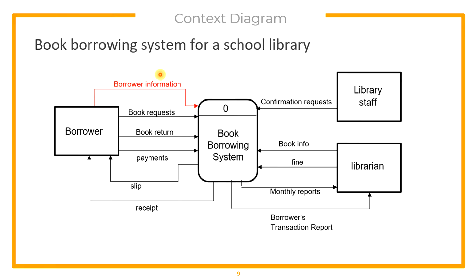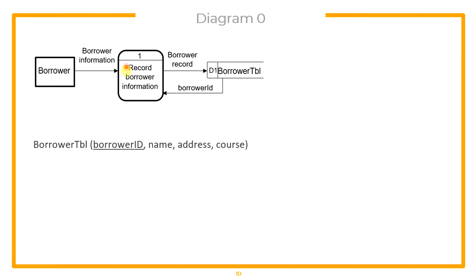Let's start with borrower information. Here we have one process for our Diagram 0. Borrower information will be recorded in the system and stored in our borrower table. Every time there is a new borrower, the last borrower ID is taken from the table plus one, and that becomes the new borrower's ID. The borrower record includes the borrower ID, name, address, and course.